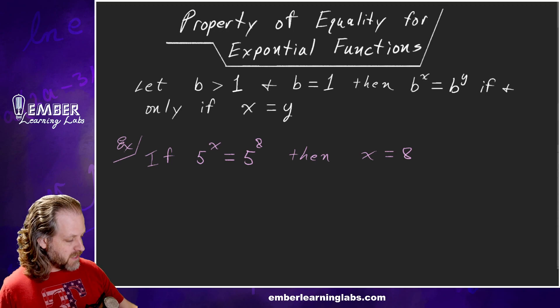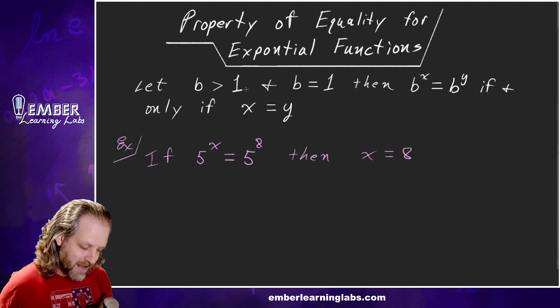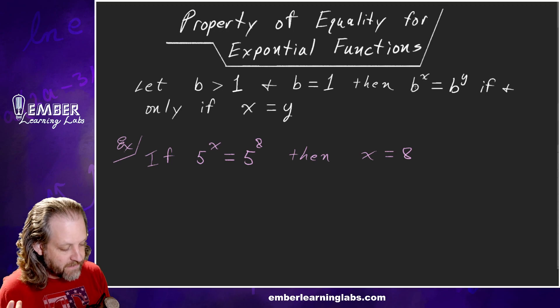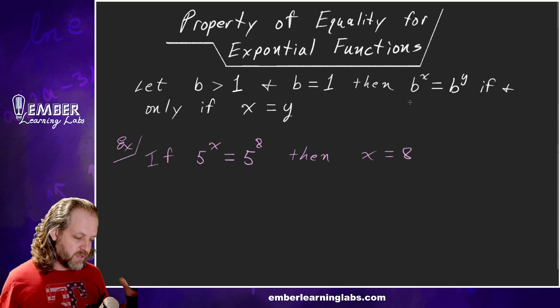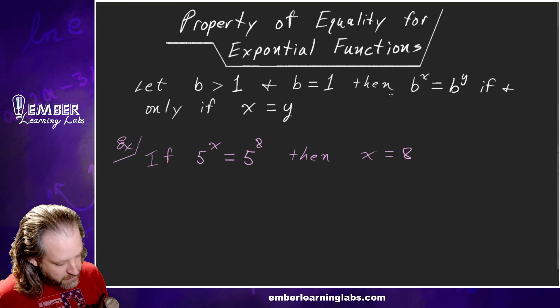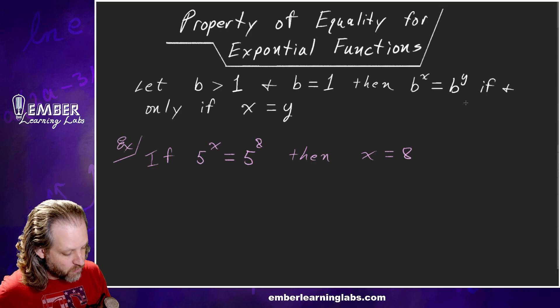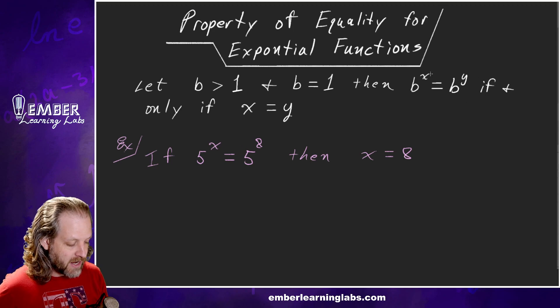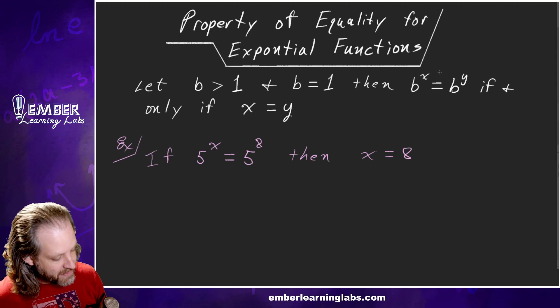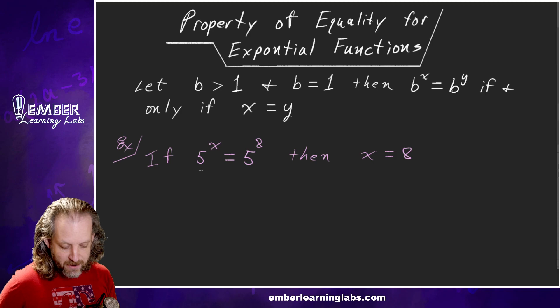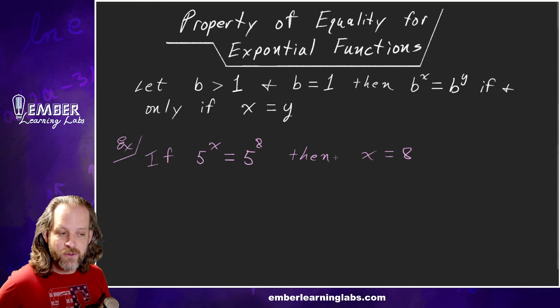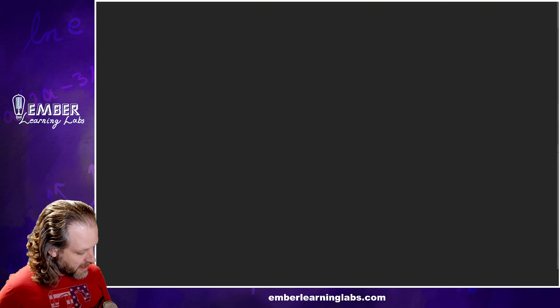The property of equality for exponential functions says: let b be greater than 1 and not equal to 1, then b^x = b^y if and only if x = y. So if the bases are the same, the exponents are equal. This is like formal talk. B has to be greater than one, otherwise if it's a fraction, you've got exponential decay and it changes the ballgame. So as long as B is greater than one, then we can set the exponents equal. For example, if 5^x = 5^8, then x equals 8 because the bases match so the exponents have to be equal. Easy peasy.